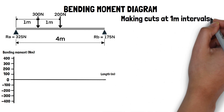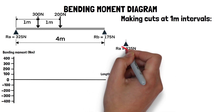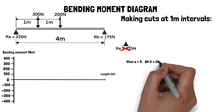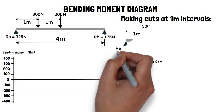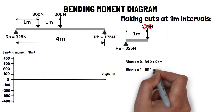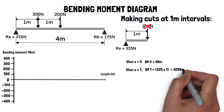Again, we'll be making cuts at one metre intervals. When x equals zero, the only force acting on the beam is the reaction force RA, but as it has a distance of zero metres, the bending moment is equal to zero, so the diagram starts at zero newton metres. When x equals one, the reaction force RA now has a distance of one metre. We also have the introduction of a 300 newton point load, but as the distance of the point load is zero, its moment is also zero. So the bending moment is calculated by 325 times one, which equals 325 newton metres.